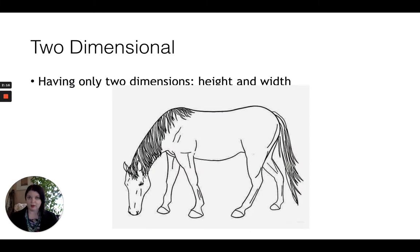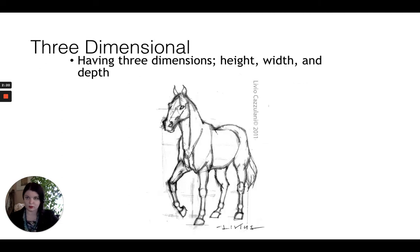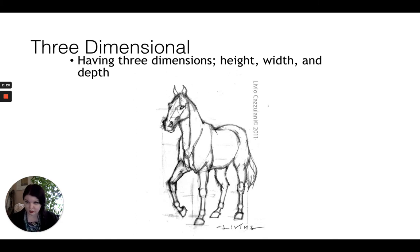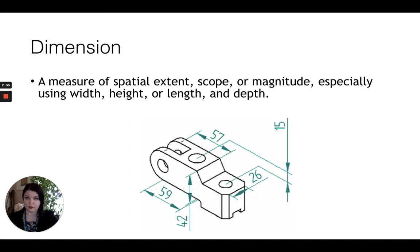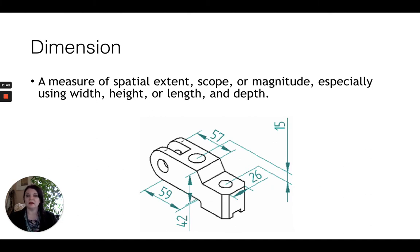Two dimensional means having only two dimensions — height and width. Three dimensional is when we have three dimensions: height, width, and depth. What we're doing as illusionist artists is we're trying to represent three dimensions on a two dimensional surface. A dimension is a measure of spatial extent, scope, or magnitude, especially using width, height, length, and depth.